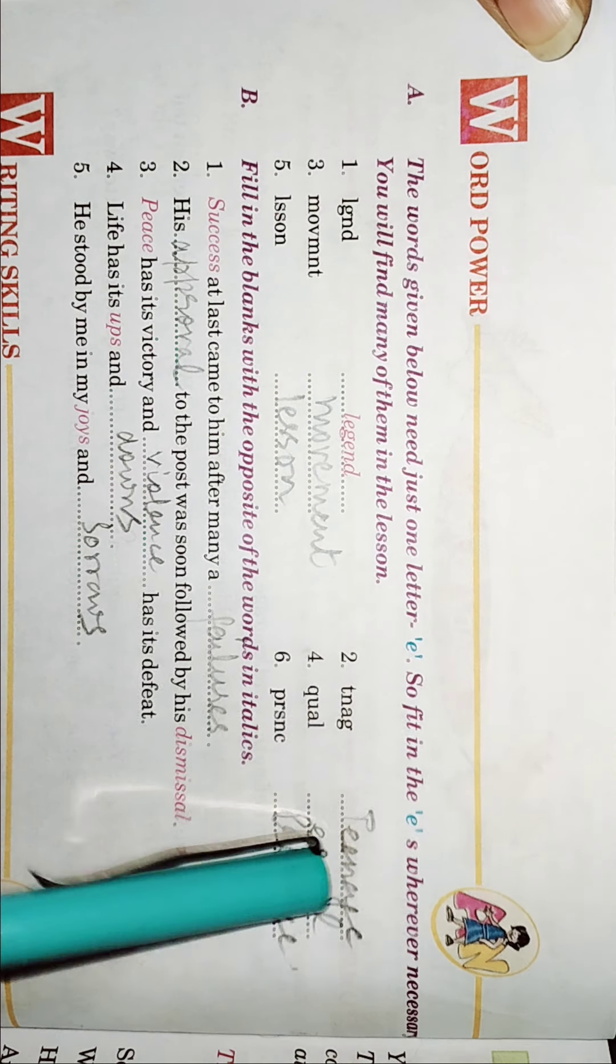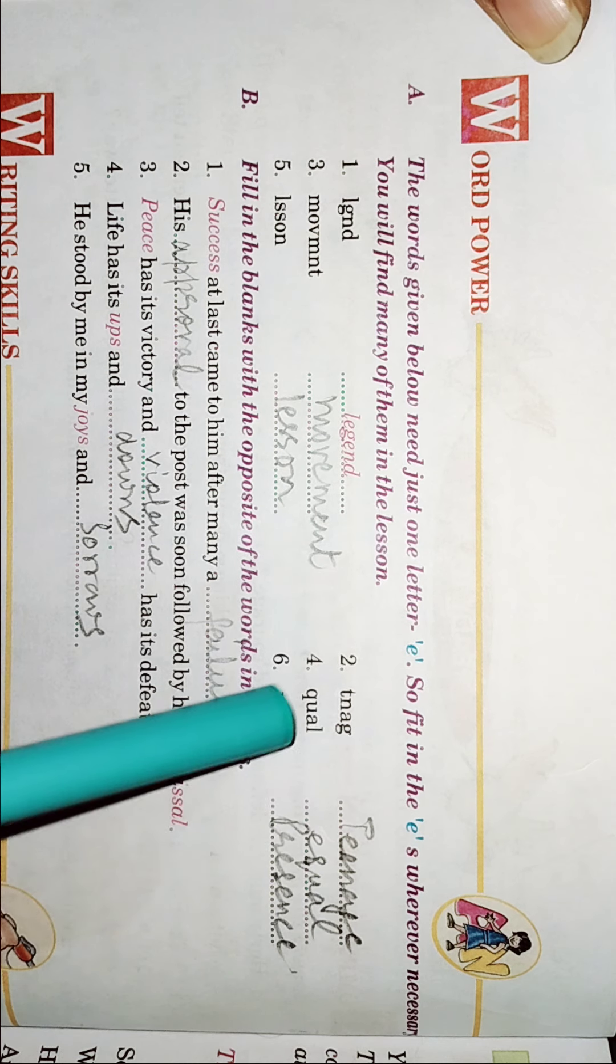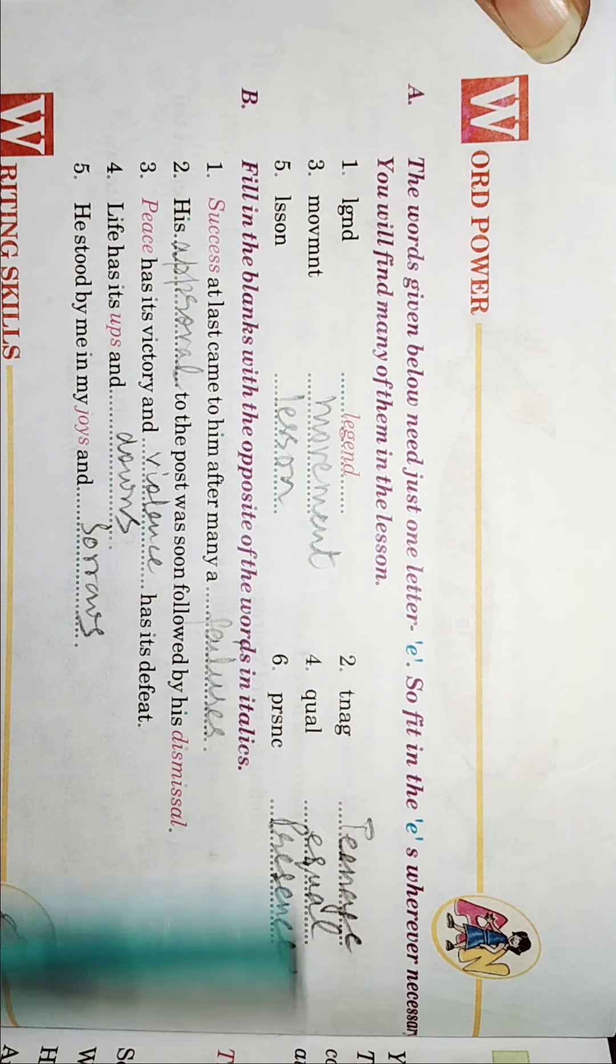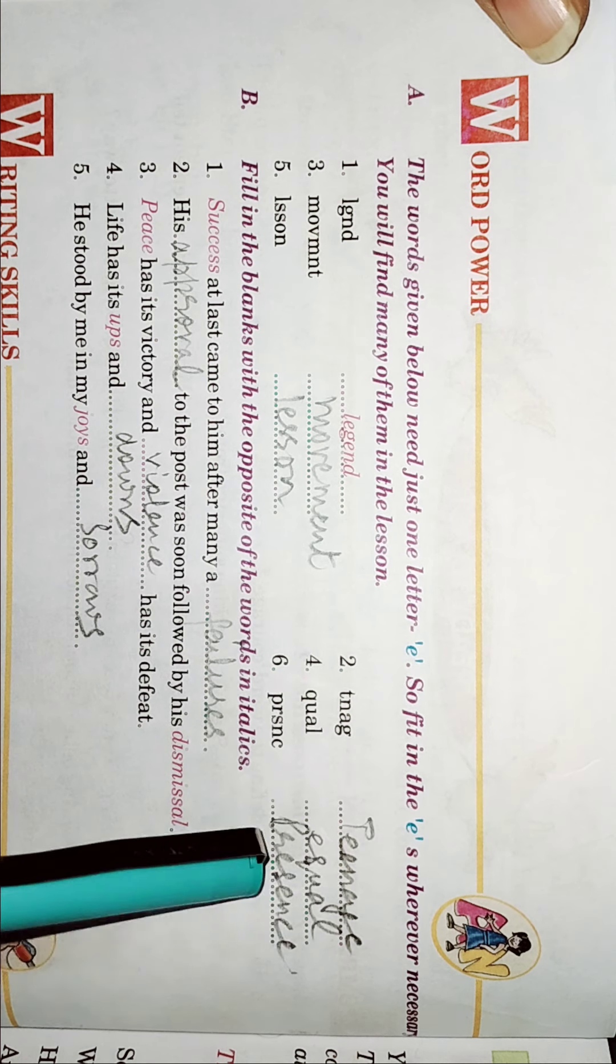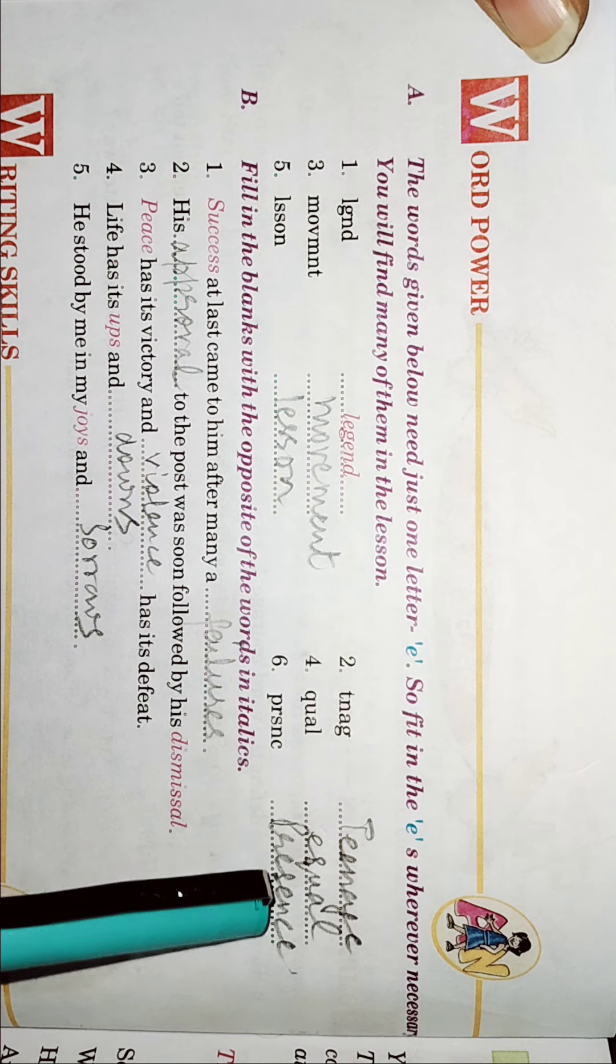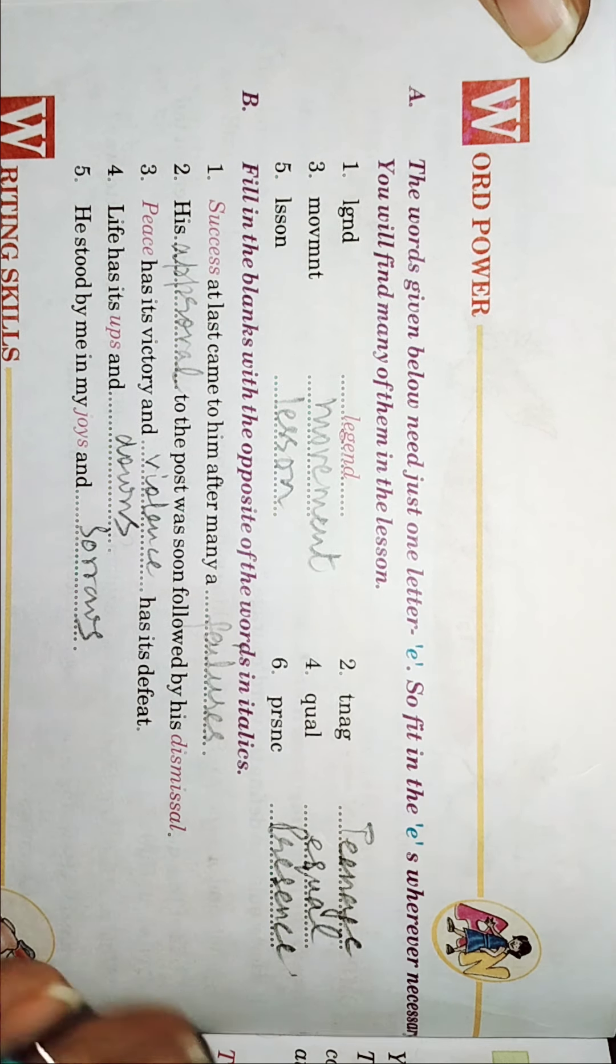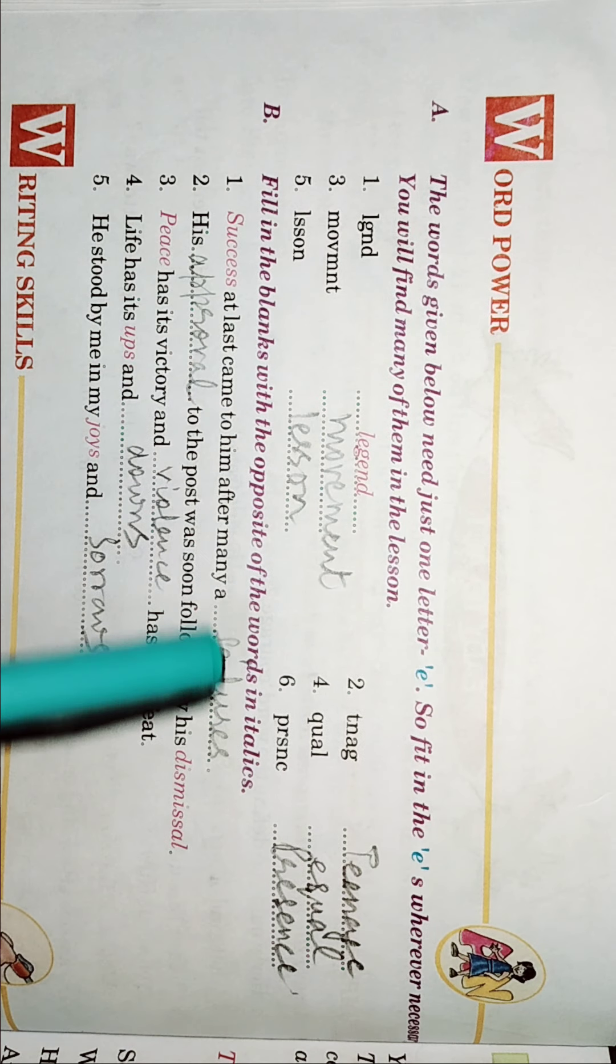This is teenage. Double E add kar diya hamne. It is equal. It is equal. E-Q-U-A-L. And this is presence. Here also, we have put three E's in this. So, now fill in the blanks with the opposite of the words.